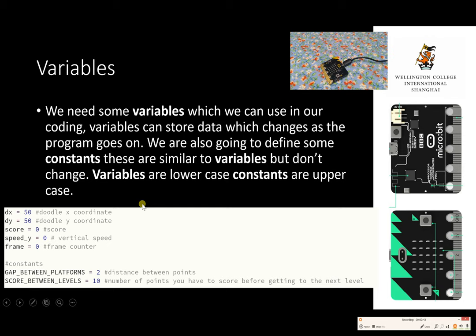Now we want to add in some of the key numbers we need. These are variables — in Python, variables are written in lowercase and they can change as the program runs. So dx is the doodle's x coordinate, dy is the y position, score starts at zero, speed starts at zero, and frame starts at zero. These are constants, written in capital letters with underscores between words. Constants don't change as the program runs — you could change them before the program runs, but during the game we don't. Python doesn't actually distinguish between these, but it's not good practice to change a constant. These are also global because they affect the whole program.